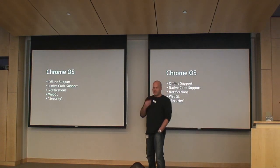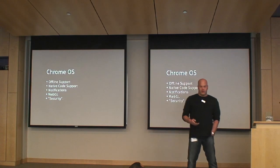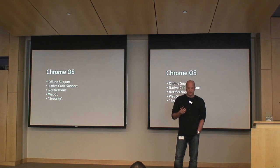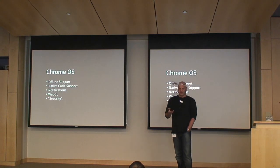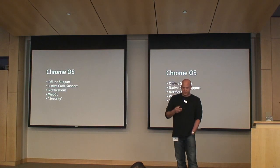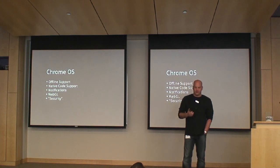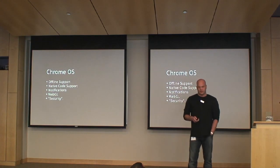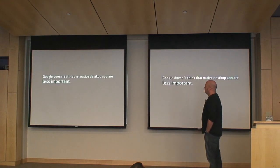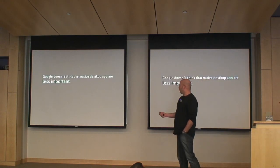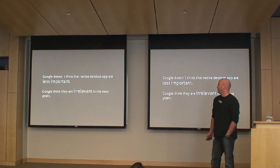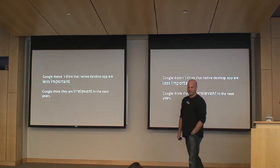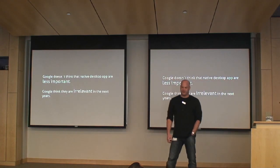On security, Chrome OS has a special feature: if you manage to modify your local operating system in any way, it will automatically download the binary again and replace it, making local modifications impossible. They call this security, but it also forces you to have everything in the cloud. Google doesn't think native desktop applications are less important in the future - they think they're irrelevant.